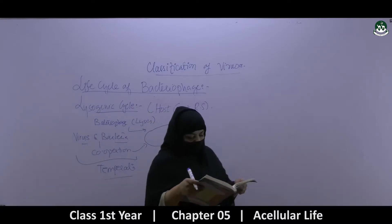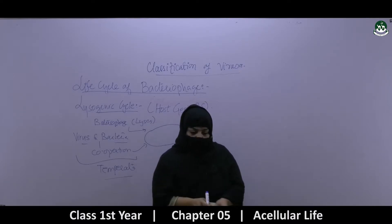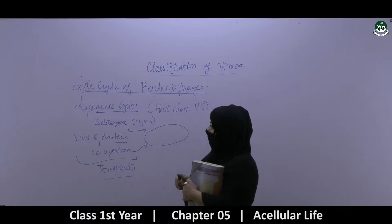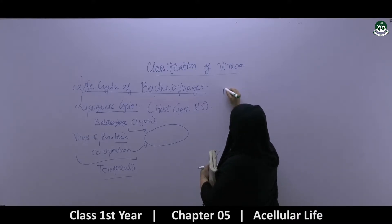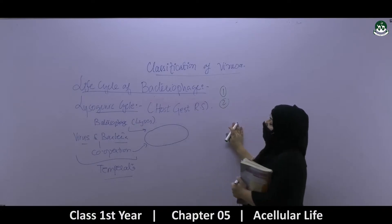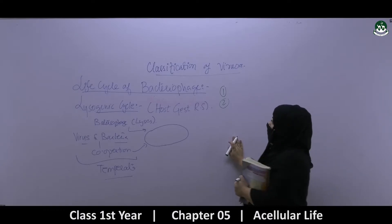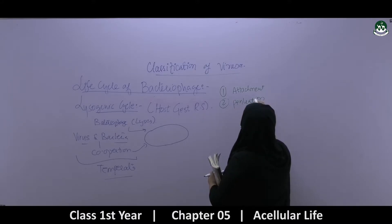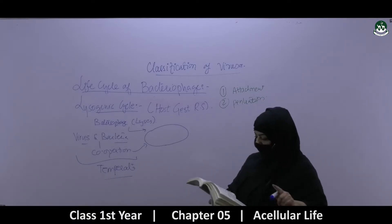In the lysogenic cycle, the first two steps — attachment and penetration — are similar to those in the lytic cycle. Both processes from the lytic cycle exist at the start. Attachment will happen the same way, and after that penetration will also happen the same way. So both attachment and penetration will occur.